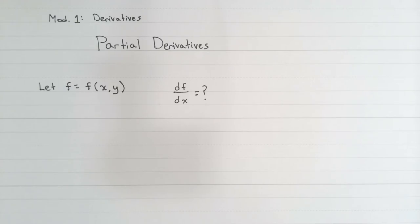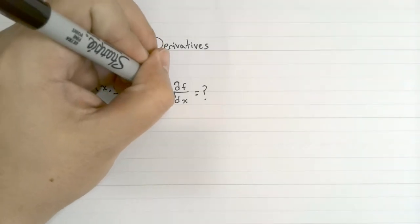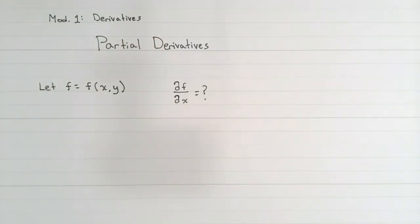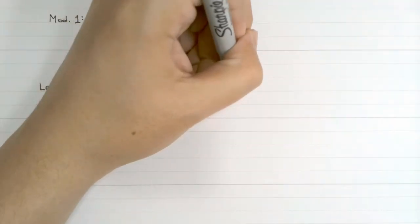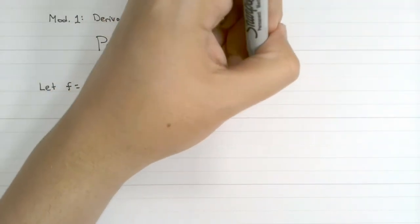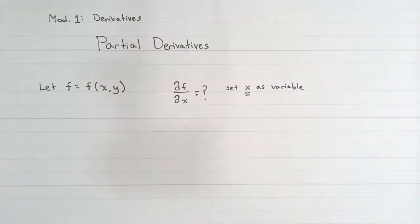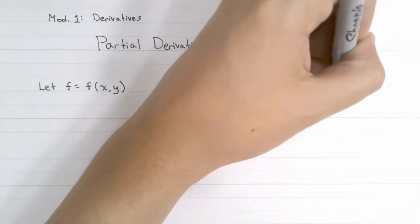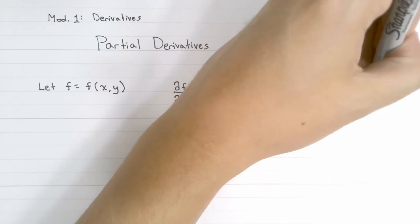We're going to identify partial derivatives with this little squiggly d, sometimes called dow or dole. The idea behind finding a partial derivative is to let x be your variable and then treat any other variable as a constant.